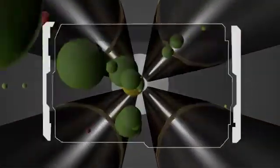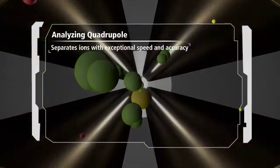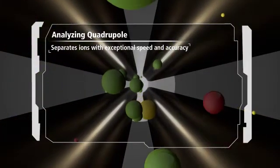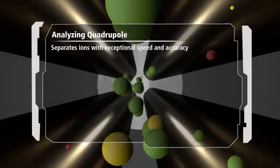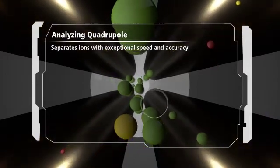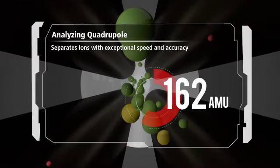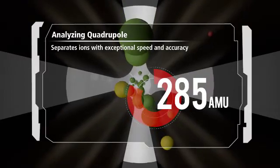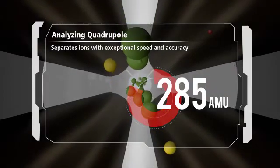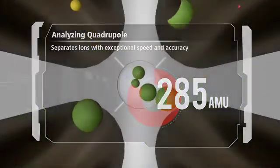With the interference removed, ions are passed into the analyzing quadrupole. Once in, these ions are separated according to their mass to charge ratio. Perkin Elmer's analyzing quadrupole offers the highest analytical mass range available, up to 285 AMU, with exceptionally fast scanning and peak separation.